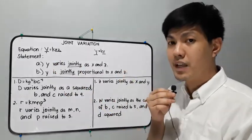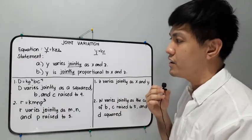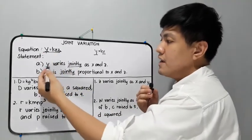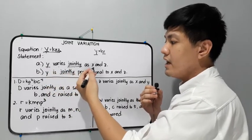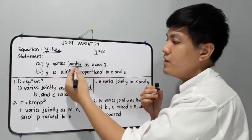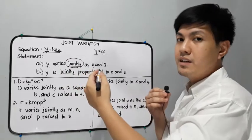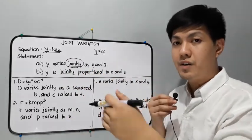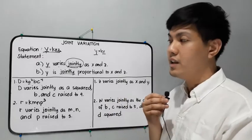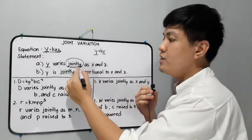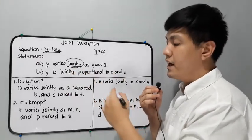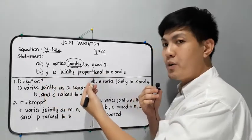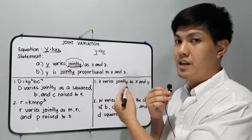Let's move on to the statement of joint variation. If we're going to read this: 'y varies jointly as x and z.' We use the word 'jointly.' In direct variation we use the word 'directly,' for inverse we use 'inversely,' and for joint we use 'jointly.' Another statement could be: 'y is jointly proportional to x and z.'